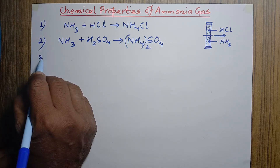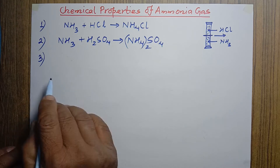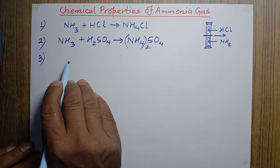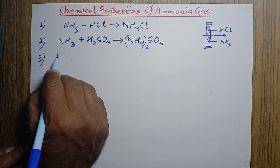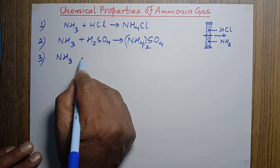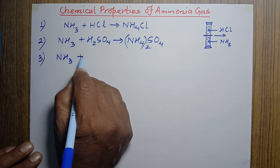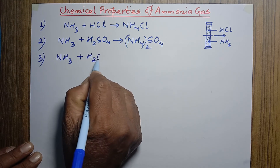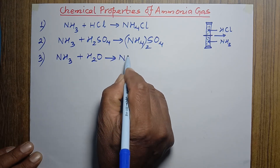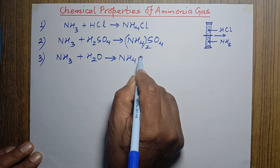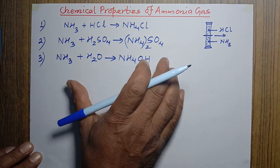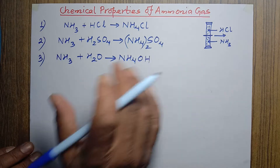Now let's talk about another one. Ammonia dissolves in water to form a weak alkali called ammonium hydroxide. This can be represented by a chemical reaction: ammonia dissolves in water and they react with each other to form ammonium hydroxide, and this is a weak alkali. This reaction represents that statement.